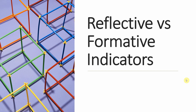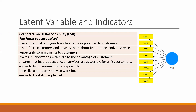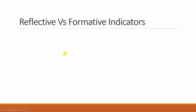In this session we are going to look into reflective versus formative indicators — the difference between them. When we are doing analysis in SmartPLS, or whatever software we are using that focuses on structural equation modeling, we have our latent variable that is measured using some indicators. In SmartPLS, you will have something like eight indicators for a latent variable such as CSR — corporate social responsibility.